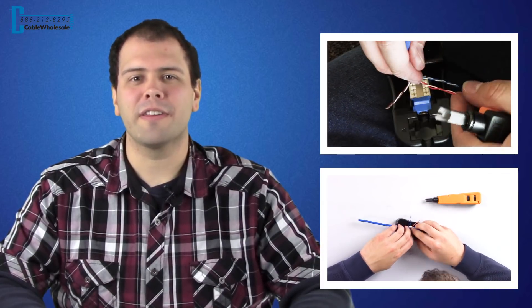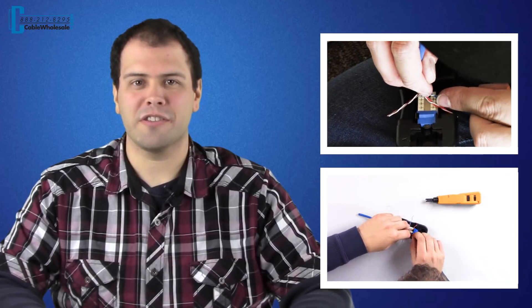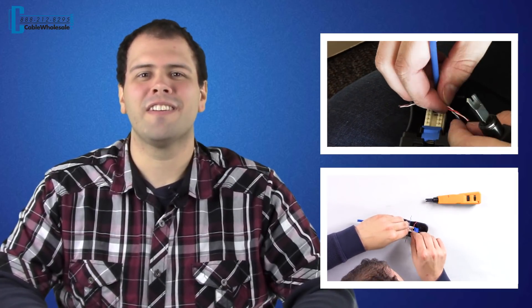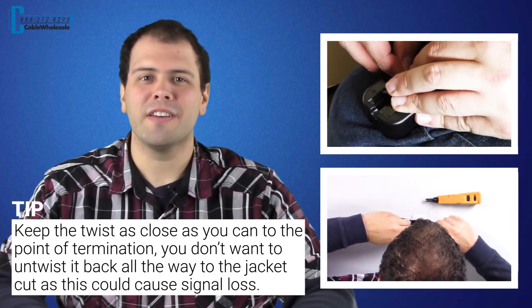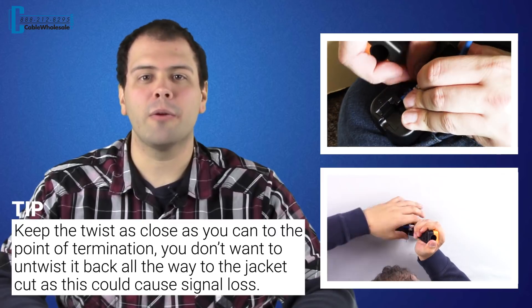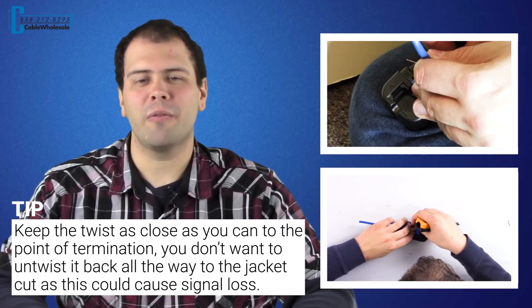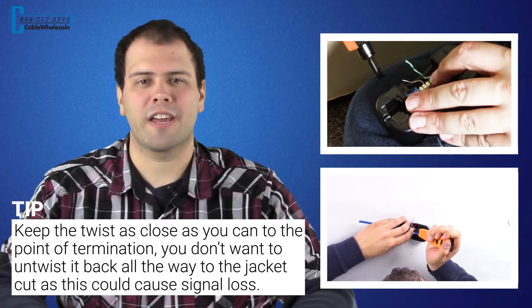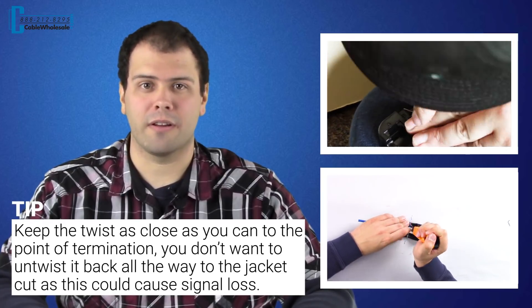Untwist the four pairs of the stripped cable and place the cable in the proper orientation to prepare for punch down. A helpful tip when doing this is that you want to keep the twist as close as you can to the point of termination. You don't want to untwist it back all the way to the jacket cut as this could cause signal loss.